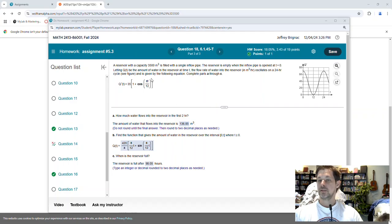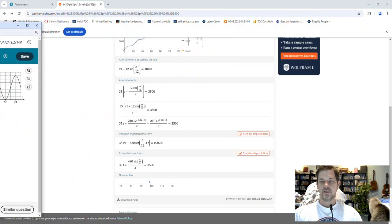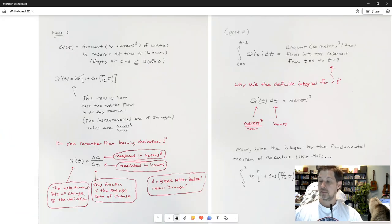It goes like this: we're filling a reservoir with a pipe. The reservoir is empty when the pipe's open at t equals 0, and I've got this function that tells me how fast water is flowing into the reservoir.